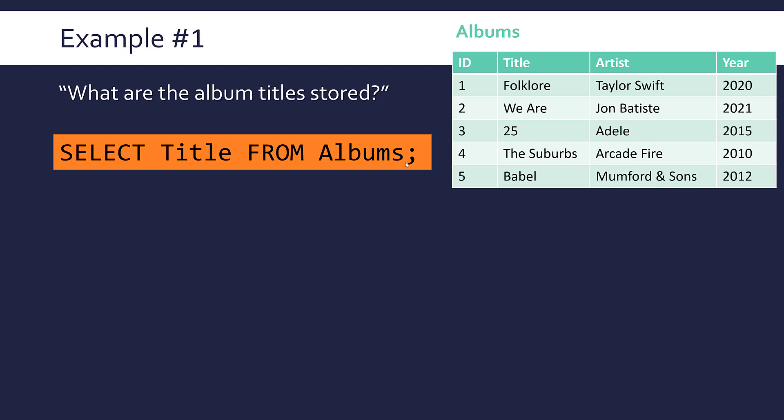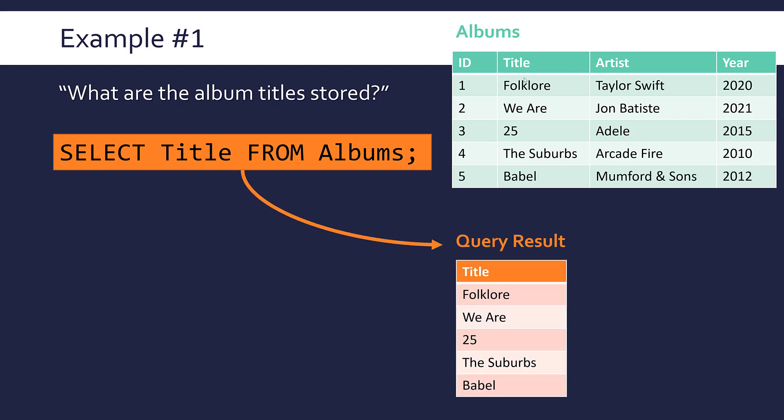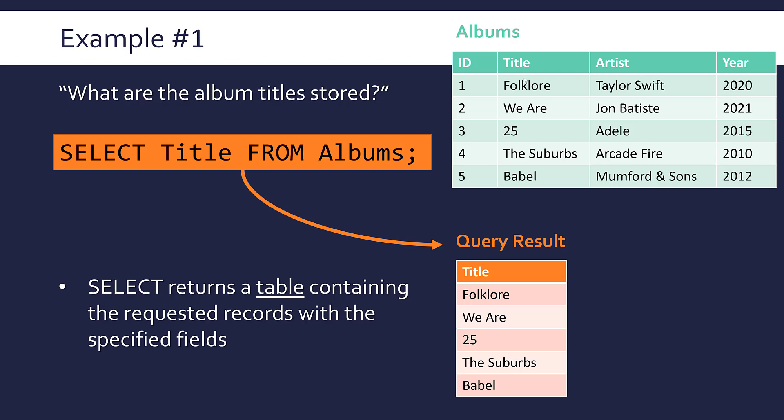Often in a proper database management system, you'd put a semicolon to end your query. If you leave it off, not really a big deal. Likewise, capitalization of things like select and from is not that important. I would capitalize it if I was you and make sure the capitalization of your field names and your table names matches. If you run this query with this table, you'd get this result: all five records but with only one field, which is title. Select will give you back a table which has your requested records with only the fields you specified in the query.